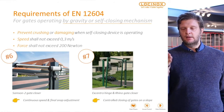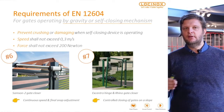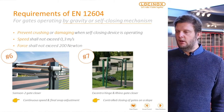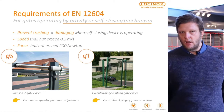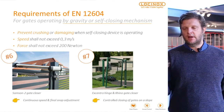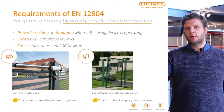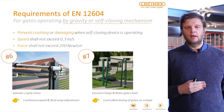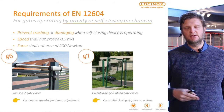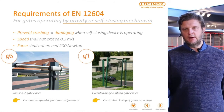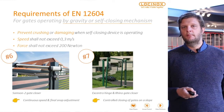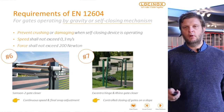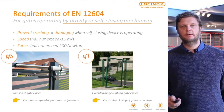Apart from that, solution number seven: gravity. We have, as you all know, the eccentric hinge — that hinge that can be used for sloped spaces, for example — and that in combination with the Rhino gate closer to have a controlled closing of the gate.